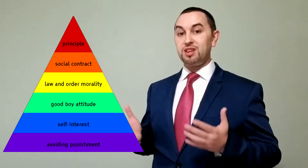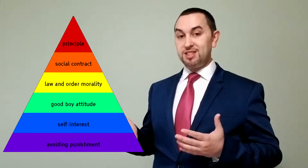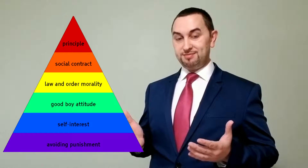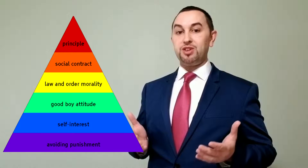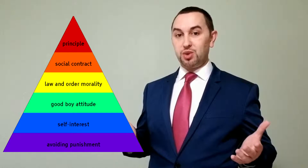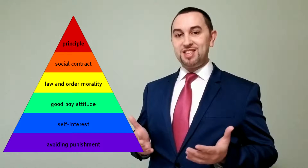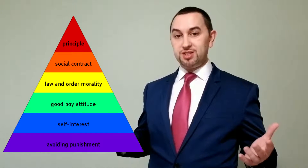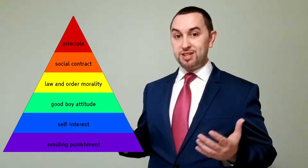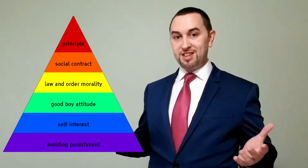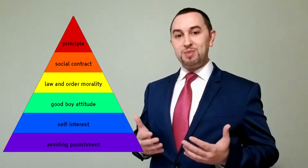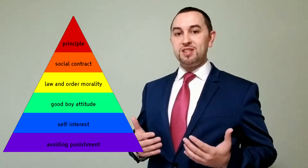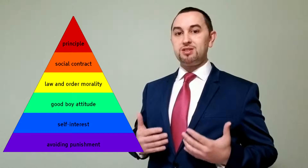Level two is called conventional morality. Stages three and four are part of this level. Stage three is about good interpersonal relationships. At this stage, you care about your relationships with others, such as your family, friends, and the community. You want people to see you as being a good person, so your morality is based on social approval.